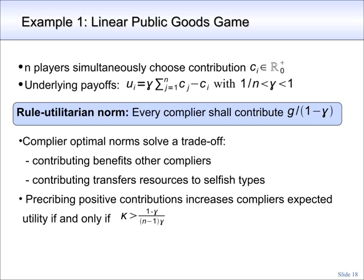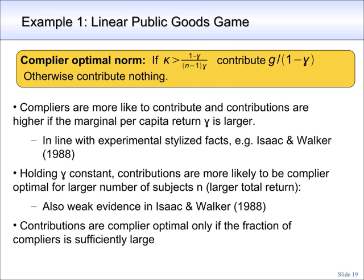The numerator 1 minus gamma is the cost of contributing one unit for a complier, and the denominator is the benefit that one unit of contribution gives to other players. Note that if the compliers' share kappa is below this threshold, then under rule utilitarian norms, which always prescribe giving positive amounts, compliers have a negative expected utility. If the compliers' share exceeds this threshold, then complier optimal norms prescribe contributing g divided by 1 minus gamma. Otherwise, they are allowed to give nothing.